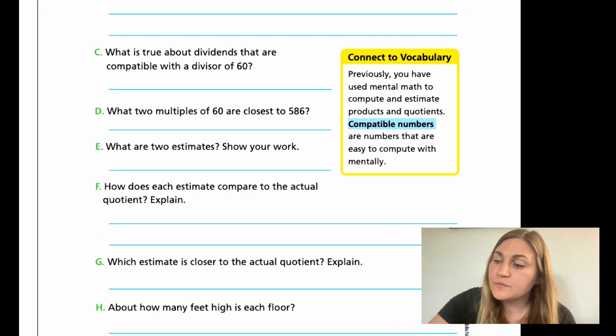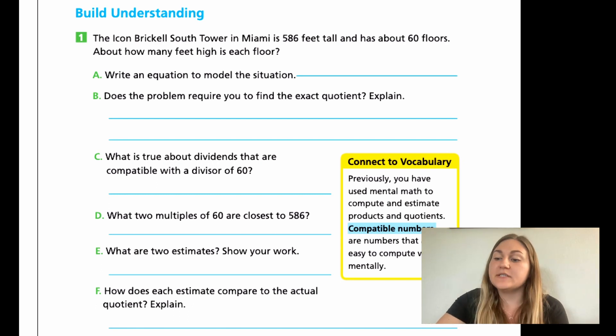Moving to our first problem in the Build Your Understanding, it says the Icon Brickle South Tower in Miami is 586 feet tall and has about 60 floors. About how many feet high is each floor? Very similar question. So I'm going to group together A, B, and C, and I'm going to have you do those all together in one little package.